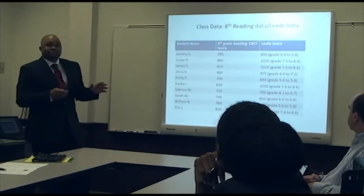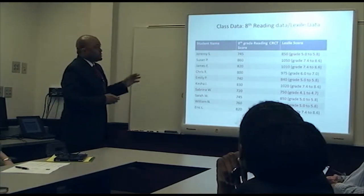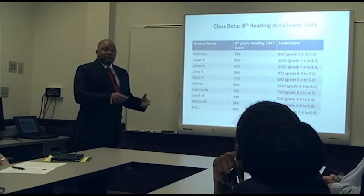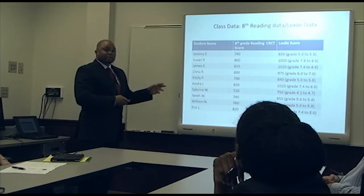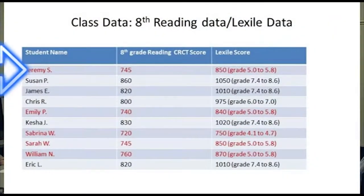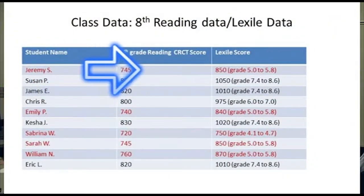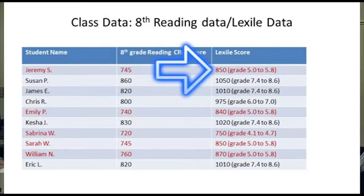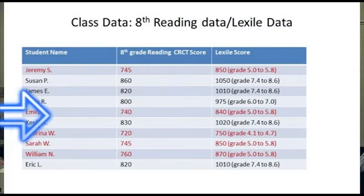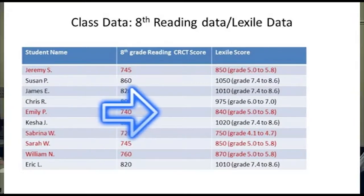This is a class of 39 ninth grade biology students. Students highlighted in red are performing two or more grade levels below the target reading performance. We've highlighted their eighth grade CRCT score as well as the associated Lexile score. For example, Jeremy S. had an eighth grade CRCT reading score of 745, with a connected Lexile of 850 — meaning he's reading at a fifth grade level, two or more grade levels below where he should be.